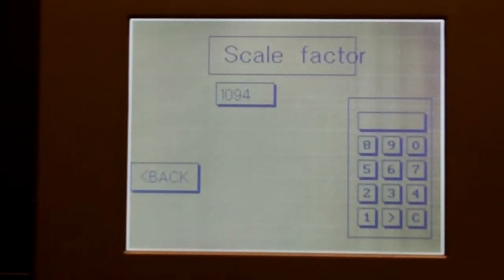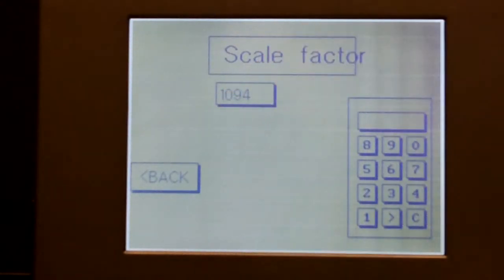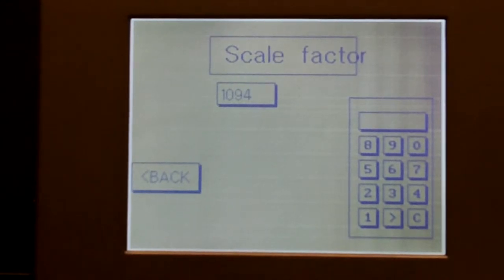The scale factor suggests the relationship between the pulses generated by the measuring wheel and the diameter of the measuring wheel. For instance, if a measuring wheel had a 3-foot or 36-inch circumference and we were able to generate 33 pulses per revolution, the scale factor would be 1.090.